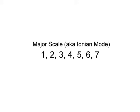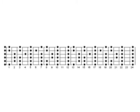The interval structure for the major scale, or Ionian Mode, will always be root, major second, major third, perfect fourth, perfect fifth, major sixth, and major seventh, regardless of the key. This chart is for the C major scale, or C Ionian Mode, as it appears over the entire fretboard.